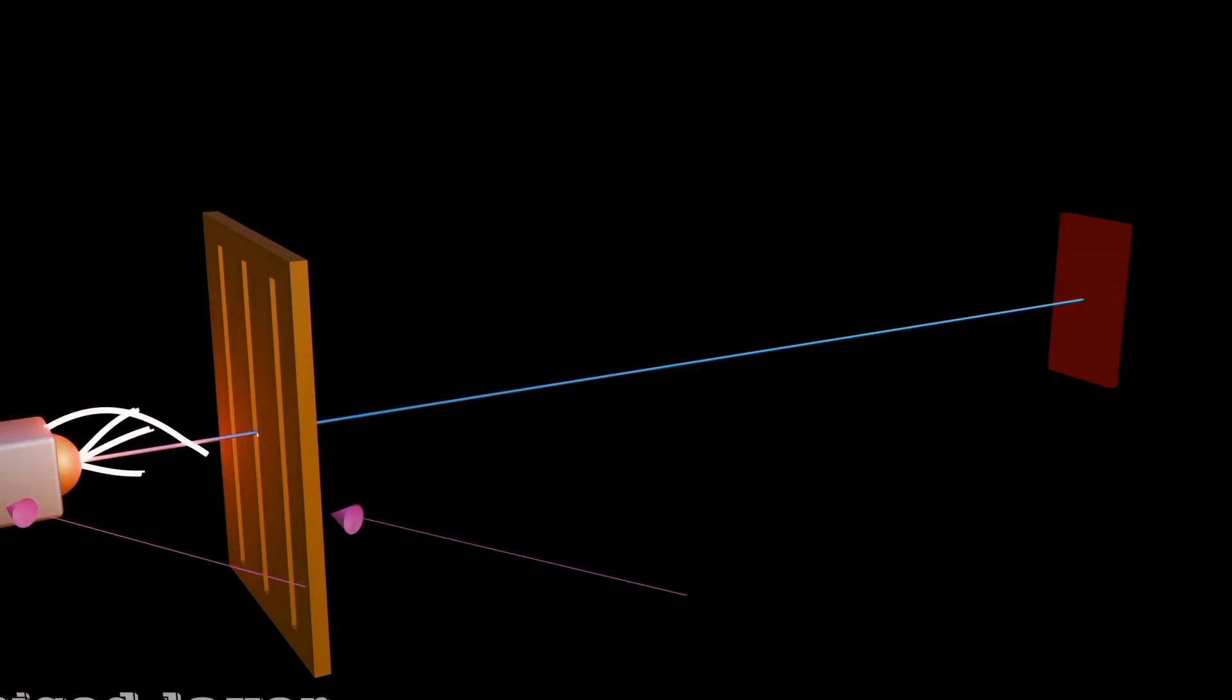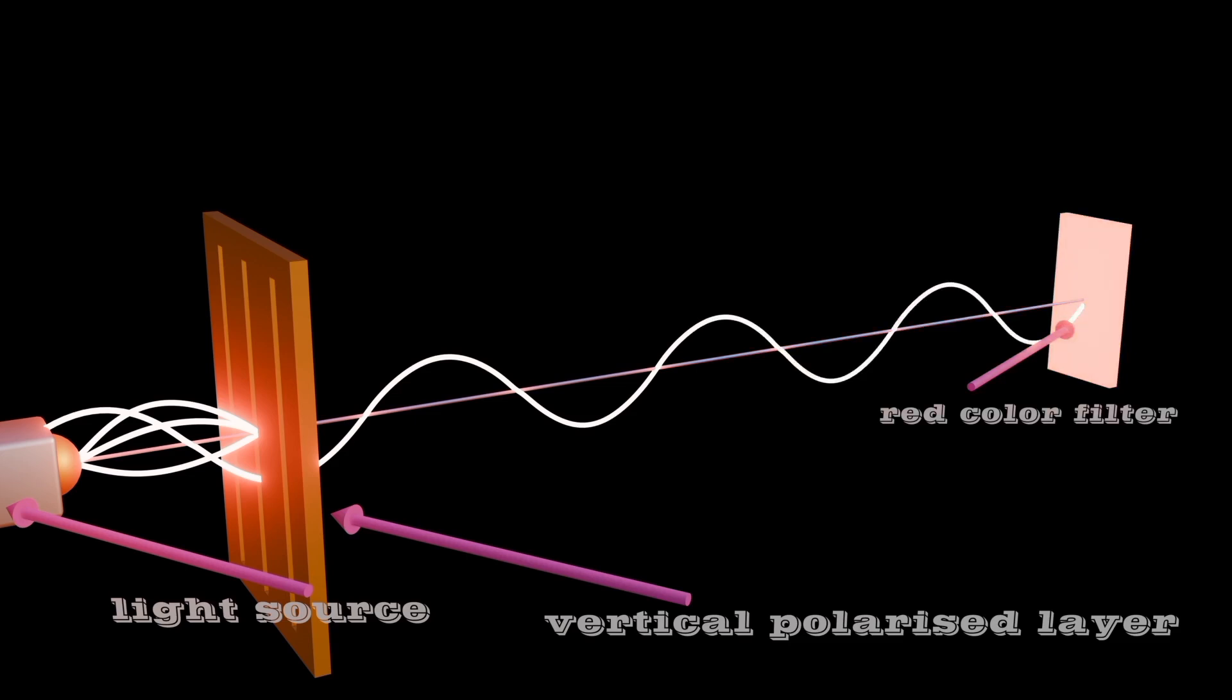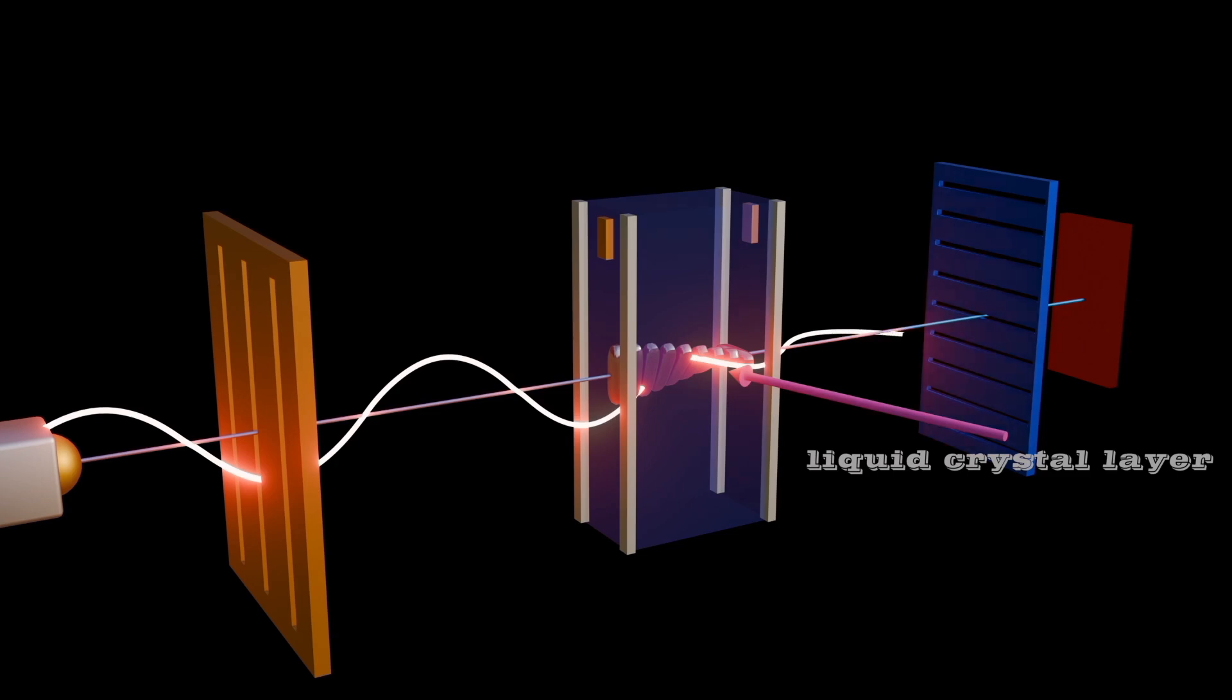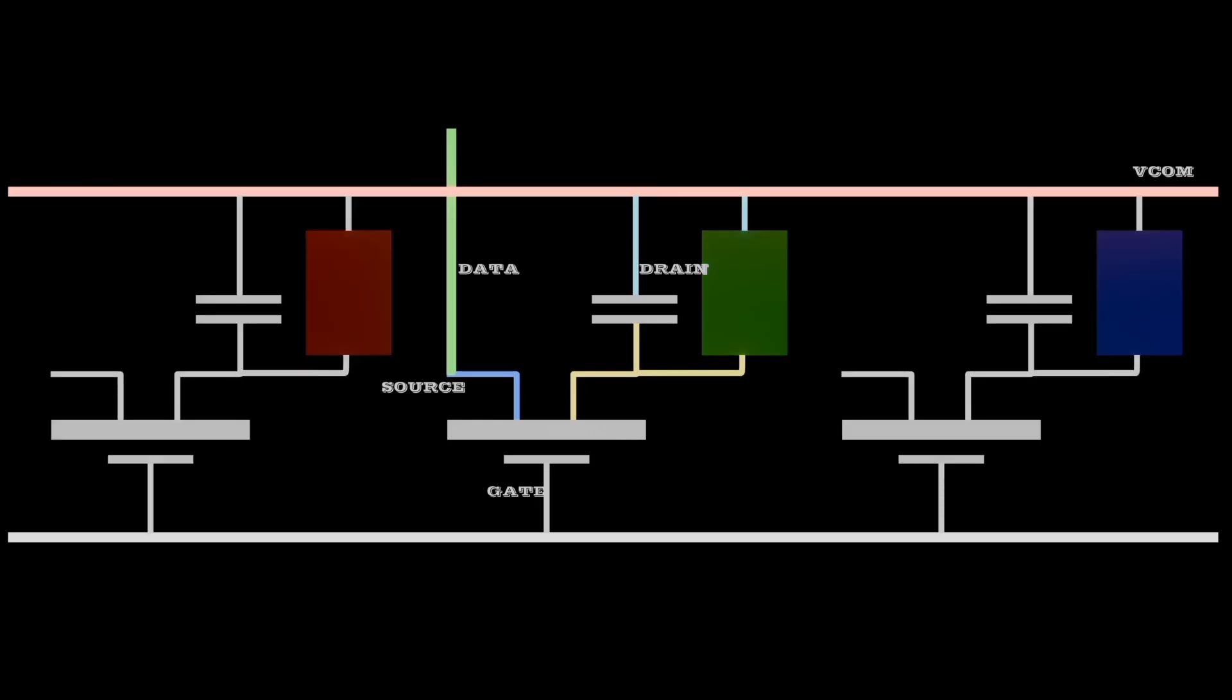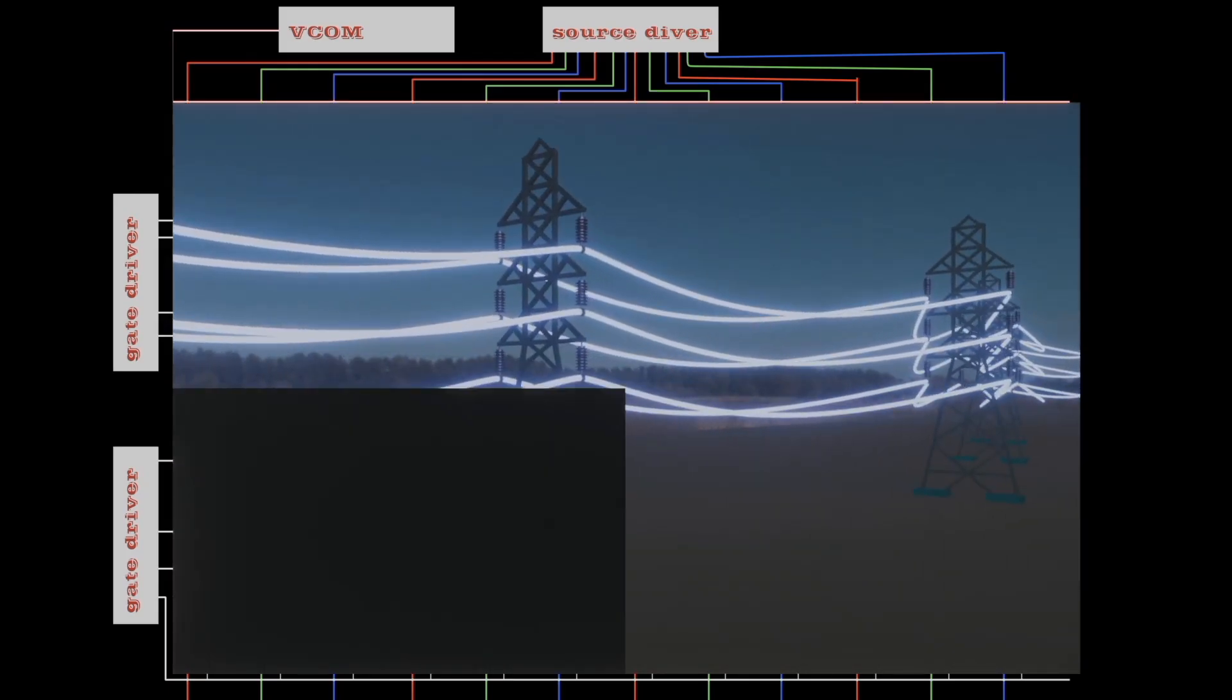We are going to see the concept of light spectrum across the polarized layer, the liquid crystals, and the concept of thin film transistors, how they are arranged and powered. All these you'll find in this video.